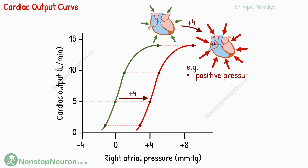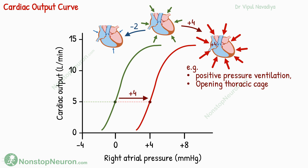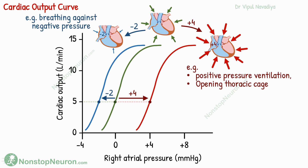Such a rightward shift is seen in cases of positive pressure ventilation and opening of the thoracic cage. In a nutshell, increasing external pressure on the heart shifts the curve to the right. A decrease in external pressure has the opposite effect, shifting the curve to the left — for example, during breathing against negative pressure. That was all about the cardiac output curve.